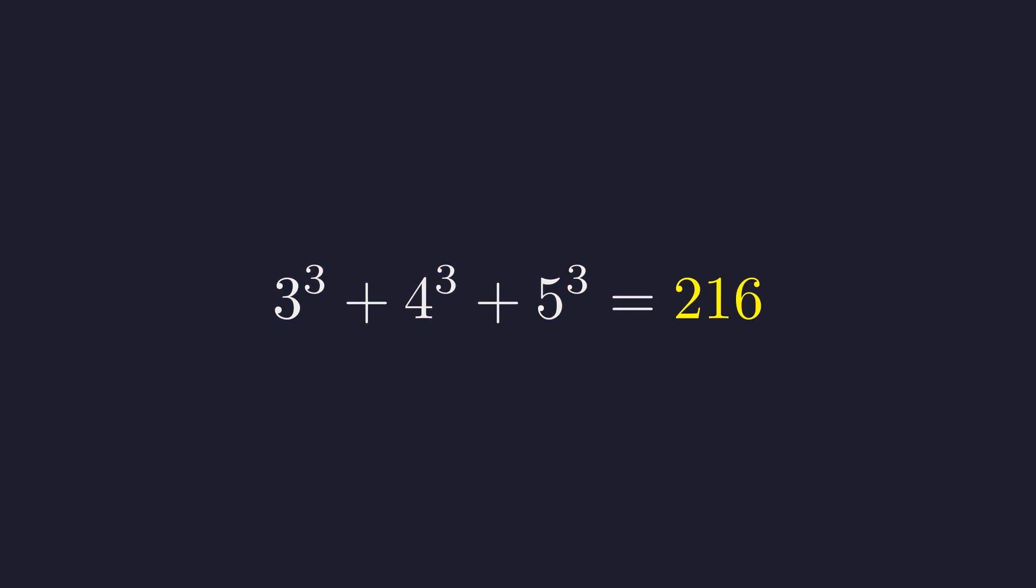Now, at first glance, 216 might just look like some random number. But here's the thing. It's not random at all. 216 is actually a perfect cube. Specifically, it's 6 cubed. Think about how remarkable this is. The sum of 3 cubed plus 4 cubed plus 5 cubed equals 6 cubed. This is one of those beautiful mathematical identities that feels almost too perfect to be true.